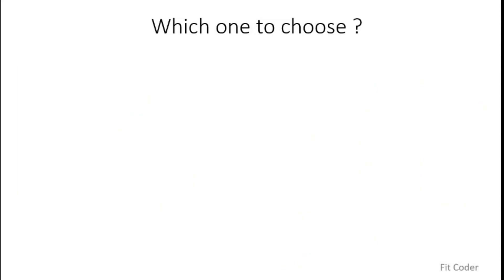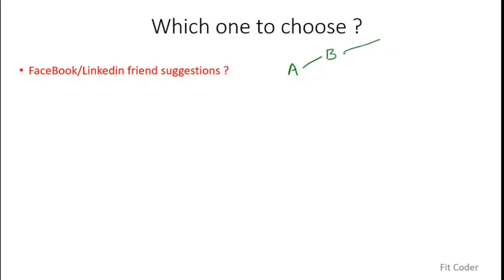More examples: Facebook and LinkedIn friend suggestions. If you are user A who is friends with user B, and B is further friends with C and D, platforms like Facebook and LinkedIn suggest that you should be friends with C and D. They do a BFS traversal up to a distance of 2 — for A, the nodes at distance 2 are C and D. The actual algorithm may differ slightly, but the basic concept is the same: friend suggestions are based on BFS traversal.